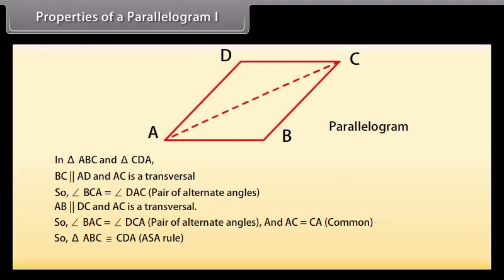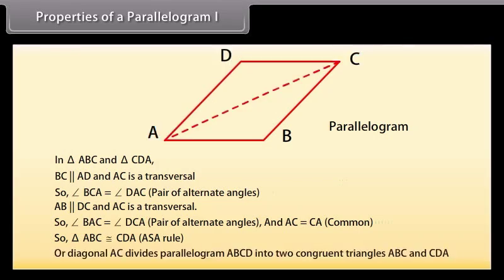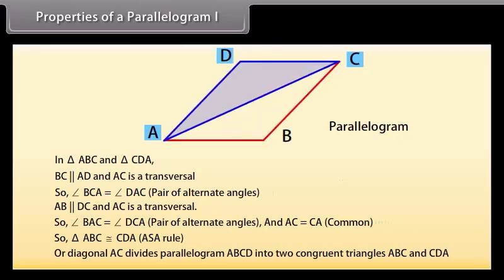So by using the ASA rule, triangle ABC is congruent to triangle CDA. Or we can say that diagonal AC divides parallelogram ABCD into two congruent triangles: triangle ABC and triangle CDA.